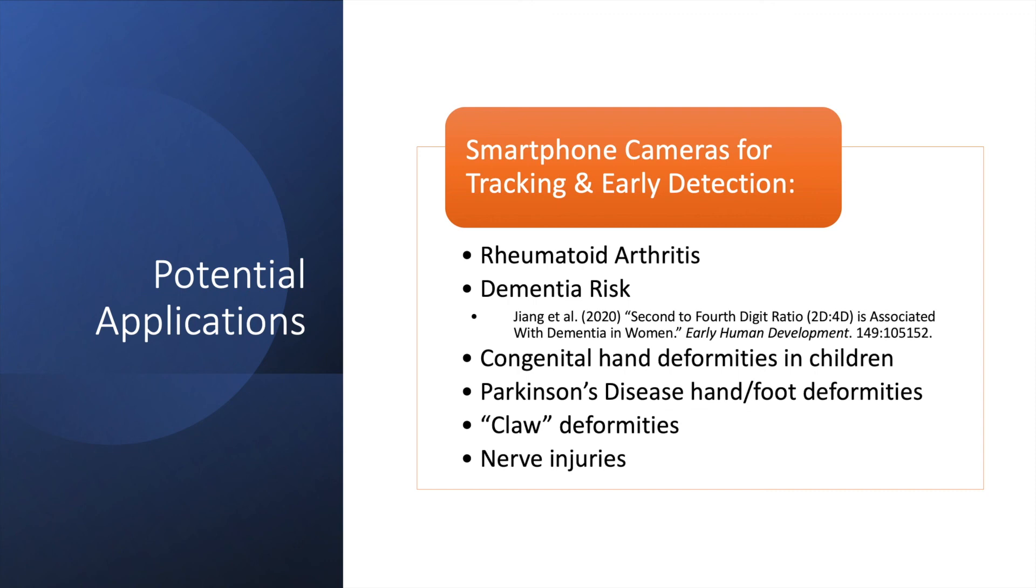Some potential application for measuring hand shapes could be used on rheumatoid arthritis, an autoimmune disease that affects joint linings, causing pain and swelling. Another application is on detecting one's risk for dementia. A study out of USC has provided evidence that the length of one's index and ring fingers is associated with one's risk for dementia.